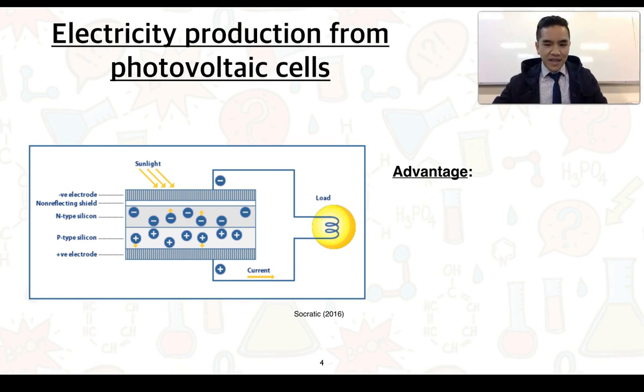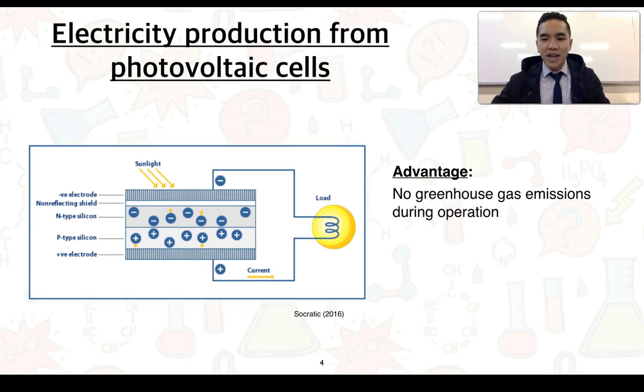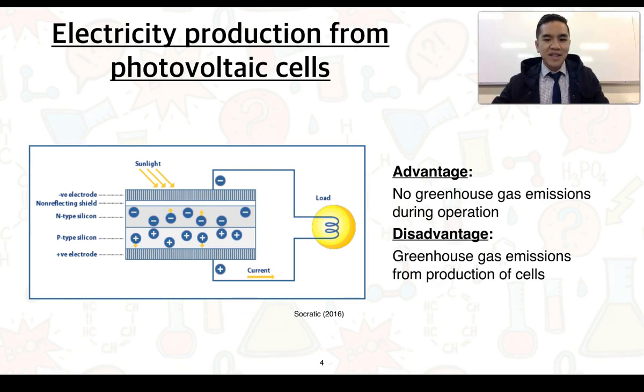The advantage of this is that this electricity production doesn't generate any greenhouse gas emissions while it's operating. A disadvantage, however, is that greenhouse gas emissions are typically produced through the production of these photovoltaic cells. So the energy requirements are typically obtained from the burning of fossil fuels.